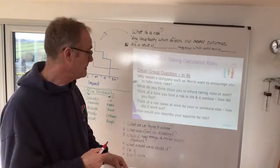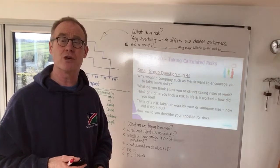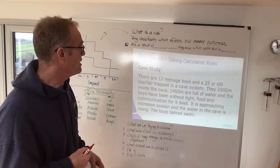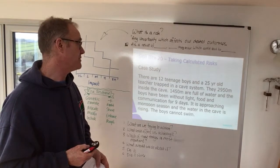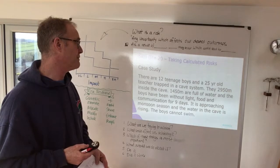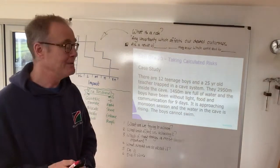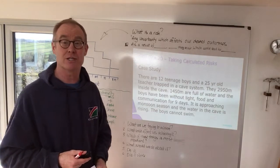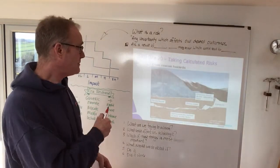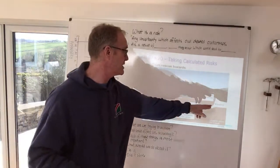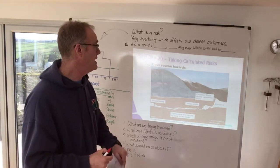Once they've been through the questions, dive straight into a case study — the Thai cave rescue, where a young football team were trapped underground. The statement reads: there are 12 teenage boys and a 25-year-old teacher trapped in a cave system, 2,950 meters inside the cave, half of which is full of water. The boys have been without food, lights, and communication for nine days. It is approaching monsoon season, the water is rising, and the boys cannot swim. In class, show them a picture and talk them through it: where the group were found, the cave entrance, and the thickness of the mountain — some points too narrow to wear a scuba tank.